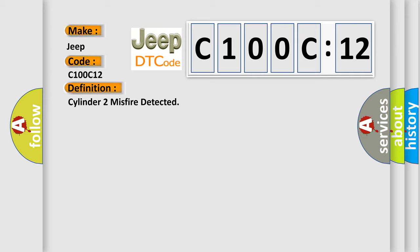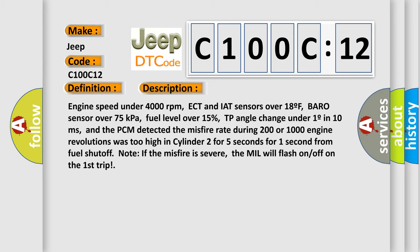And now this is a short description of this DTC code. Engine speed under 4,000 revolutions per minute, ECT and IAT sensors over 18F, Baro sensor over 75 kilopascals, fuel level over 15%, TP angle change under 1 in 10 milliseconds, and the PCM detected the misfire rate during 200 or 1,000 engine revolutions was too high in cylinder 2 for 5 seconds for 1 second from fuel shutoff. Note if the misfire is severe, the MIL will flash on off on the first trip.